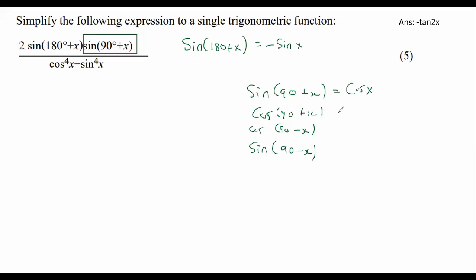This one's equal to cos x. This one's equal to negative sin x. This one's equal to sin x. And this one is equal to cos x. And so we know that the sin of 90 plus x is going to be equal to cos x. That's this one over here.